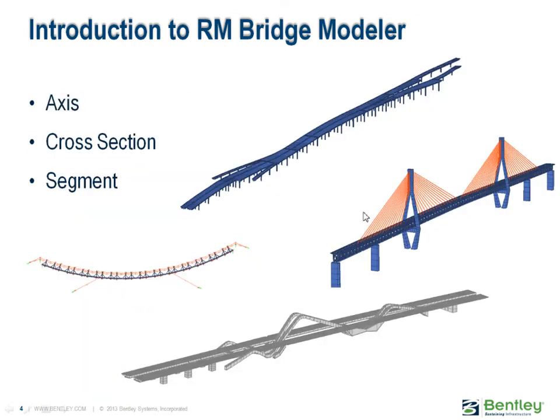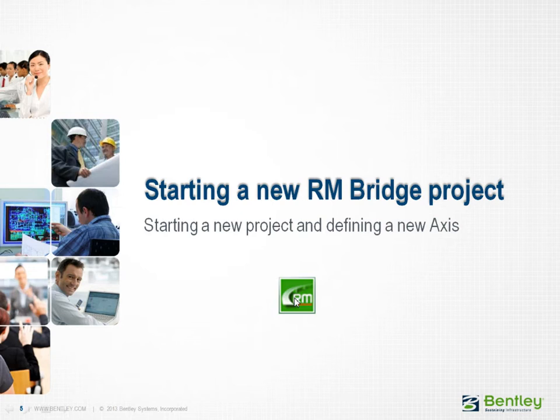Understanding this general approach on modeling of bridge structures based on axis, cross-section and segment definition will enable you to model any type and shape of bridge structures. In the first lecture of the RM Bridge Quick Start course you will learn how to start a new project and how to generate a straight axis. And later you will learn how to model a cross-section.